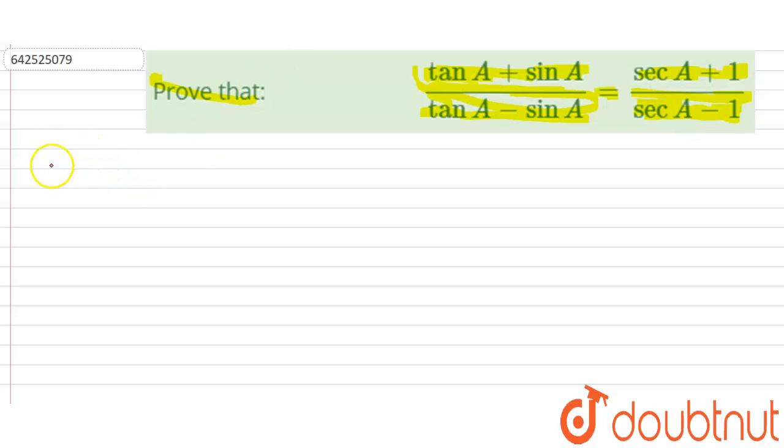So for that, let's start with the LHS. Now the LHS is tan A plus sin A over tan A minus sin A.